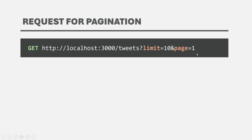When we are going to write the pagination logic in our NestJS application, we need to write it in such a way that it can be used for any type of data — so we should be able to use the same pagination logic for users, tweets, comments, etc. The pagination logic which we will write should not be entity-specific. The limit and page will come from the client, and we will use this information in our API code.